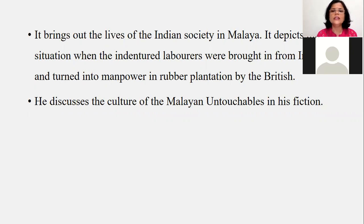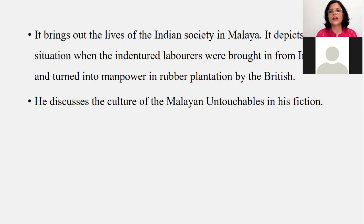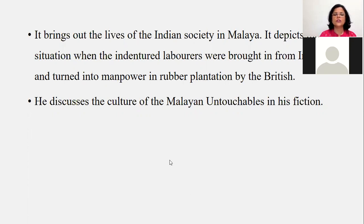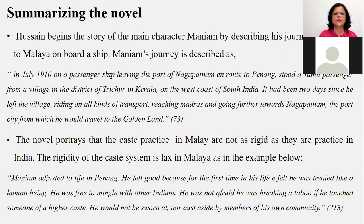This untouchability was rampant in Indian society before Indian independence, and the same picture was present in Malaysia. In this particular novel, Abdullah Hussain brings out or projects that Indian untouchability was more bitter than Malaysian untouchability — and that was highly objectionable and one of the reasons the book was removed from the fifth-standard syllabus.